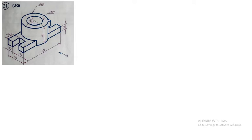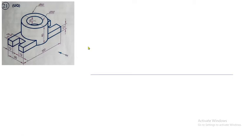Hi, dear students. In this video we will discuss another isometric projection. If you wish to see the previous isometric projection problem, you can check the link in the description box. As an observer standing here, this is the front view, the left side view, and the top view. We can start with an XY reference line, and above that this is the 100mm distance, clearly seen from the front view.